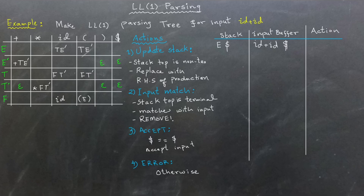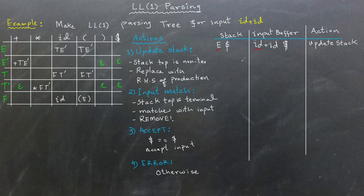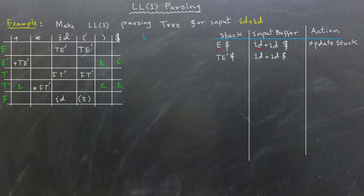Now let's go to an example. Initially, the stack contains the non-terminal E at the top and the input buffer starts with the symbol id. Since E is a non-terminal, we consult the LL(1) parsing table. The table entry for E and id shows that the production rule E → T E' should be applied. This triggers the update-the-stack action and we replace E in the stack with T E'.